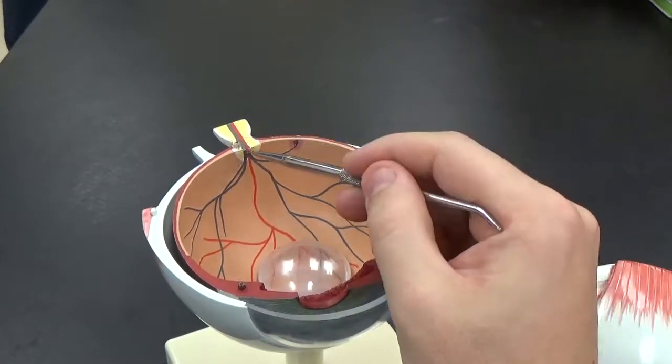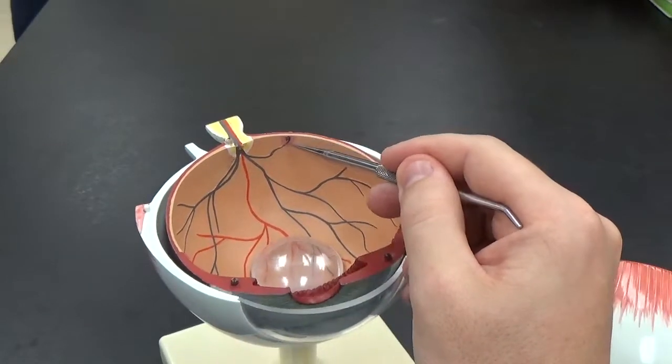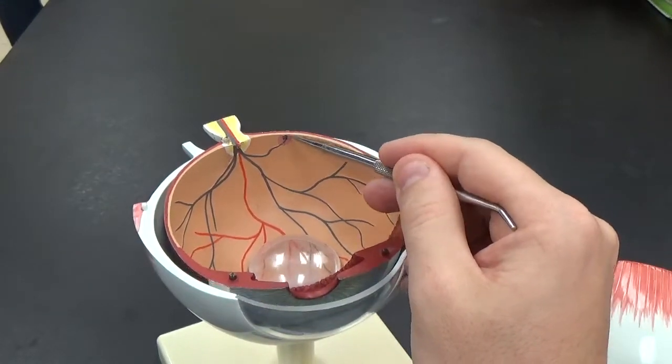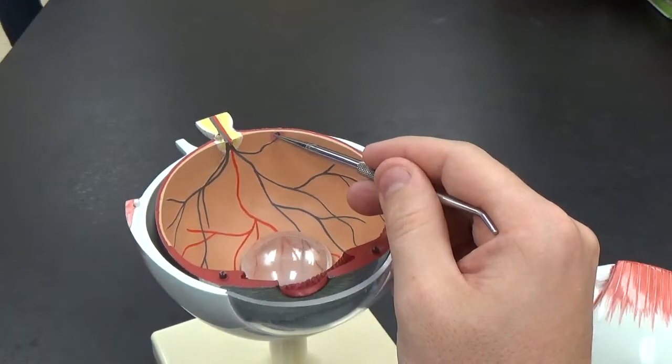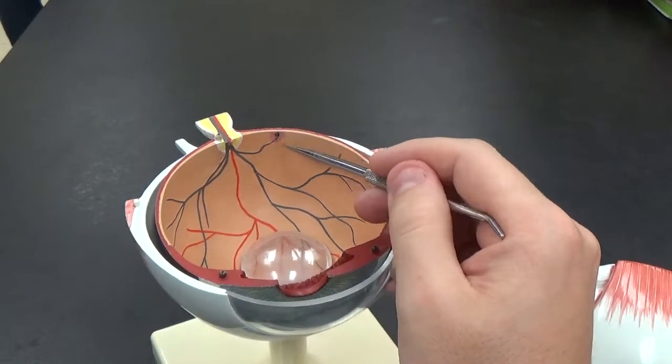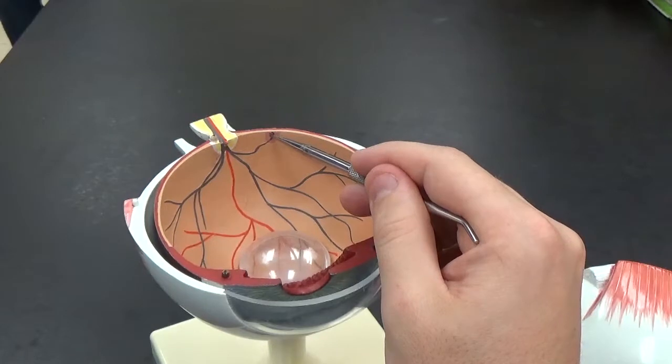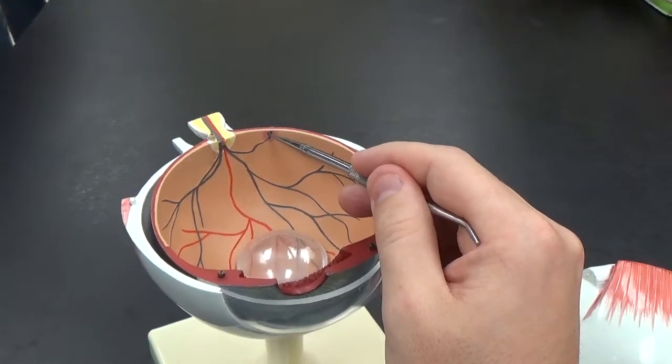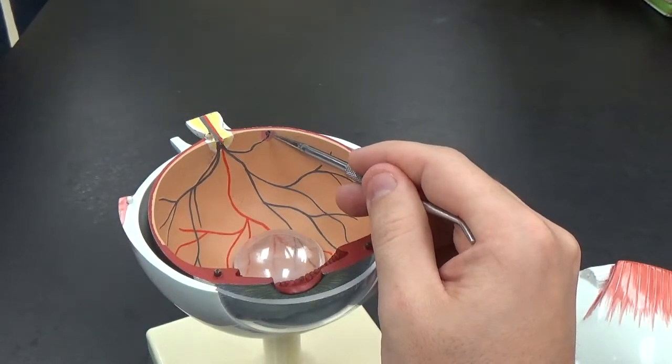You can also see, if this is the optic disc, just adjacent to it there's another region called the macula lutea. In this model, it's kind of a pink dot. Right in the middle of the macula lutea is the fovea centralis.